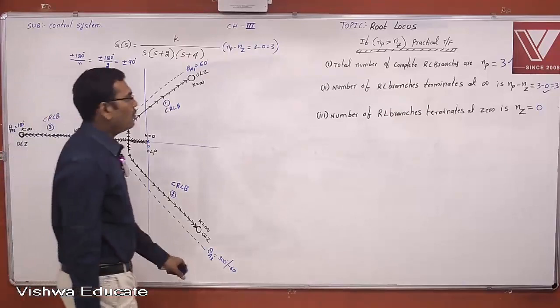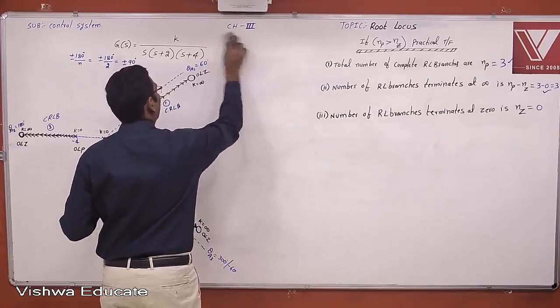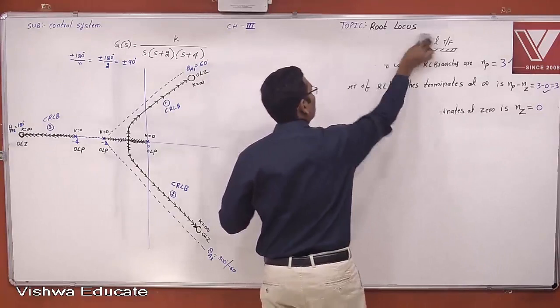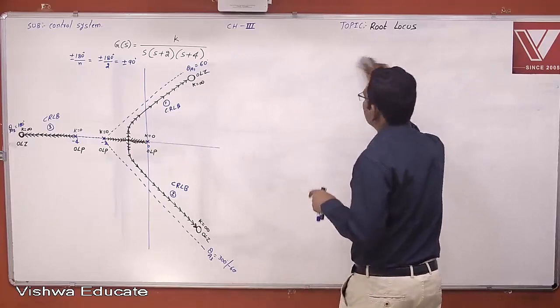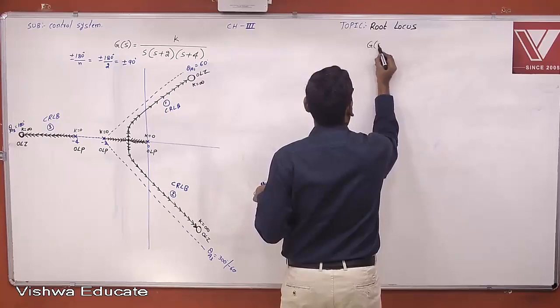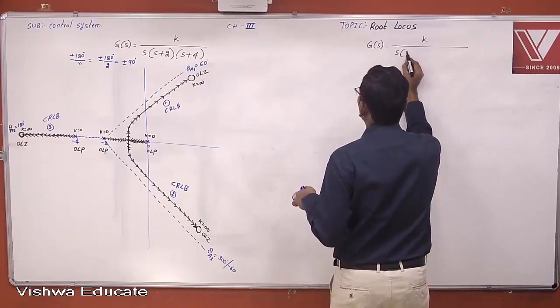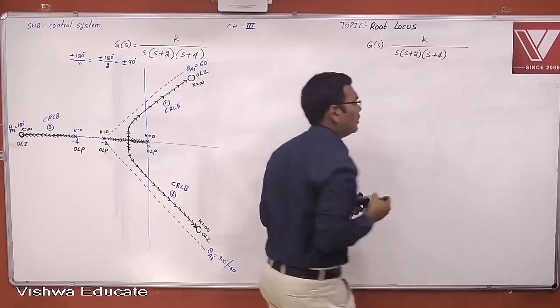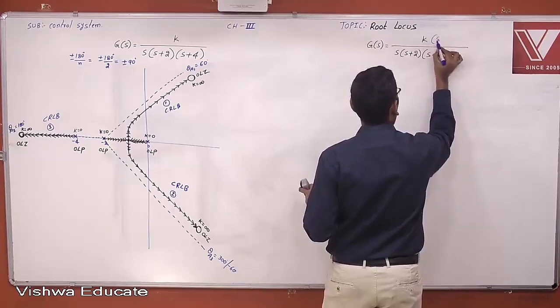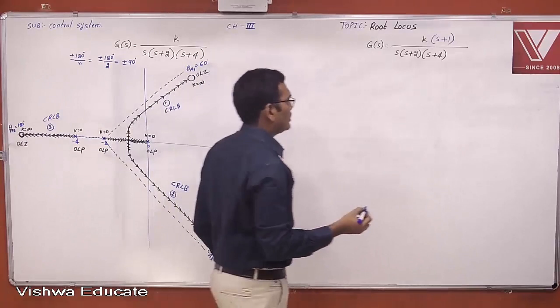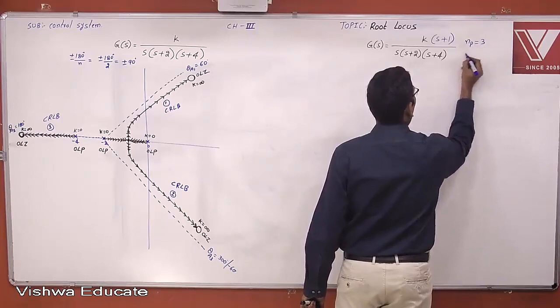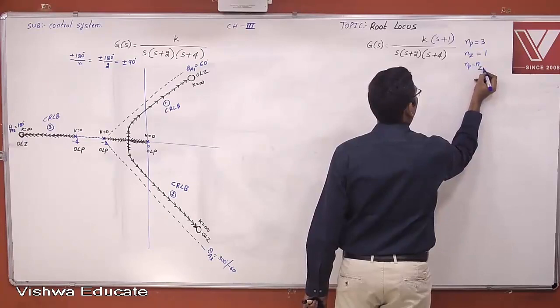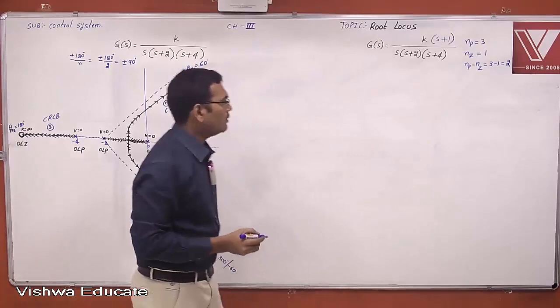Now consider the same problem with one zero added: G(s) = K(s+1) / [s(s+2)(s+4)]. Now Np = 3, Nz = 1, so Np − Nz = 2. Complete branches = 3, branches terminating at infinity = 2, branches terminating at zero = 1.